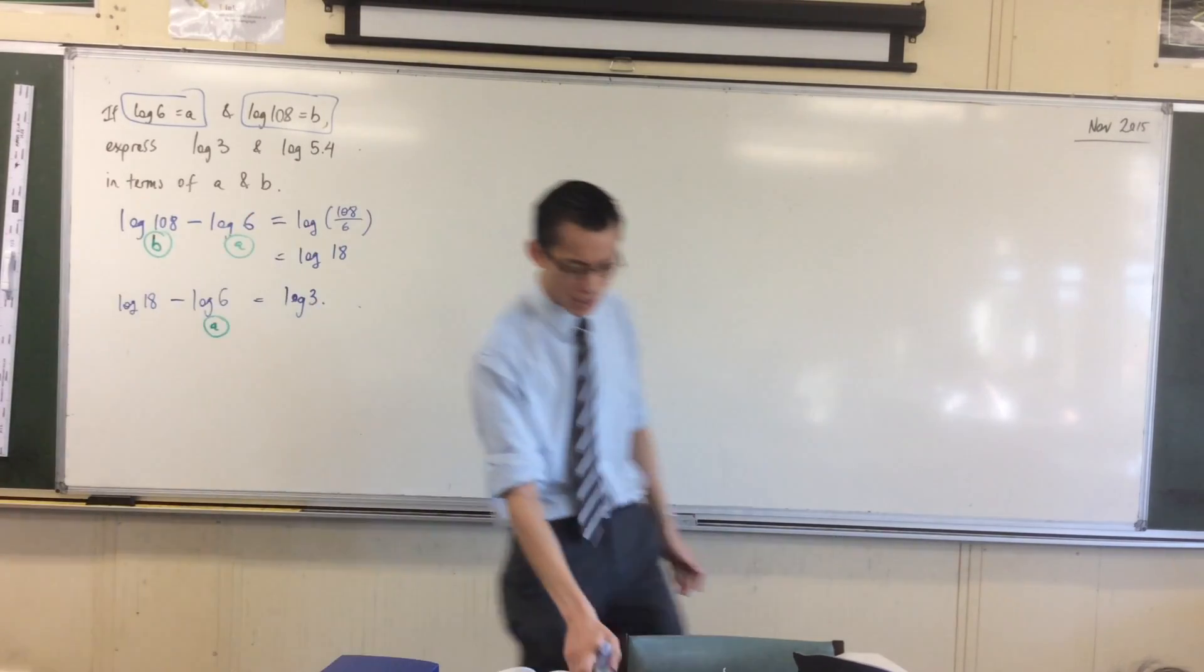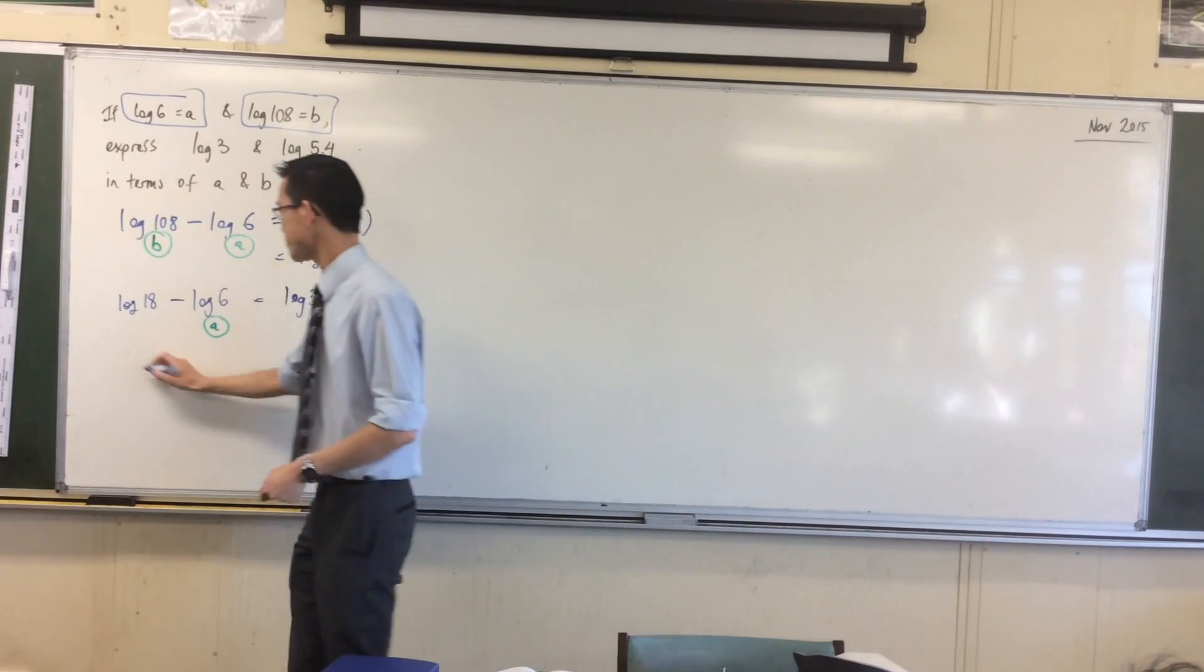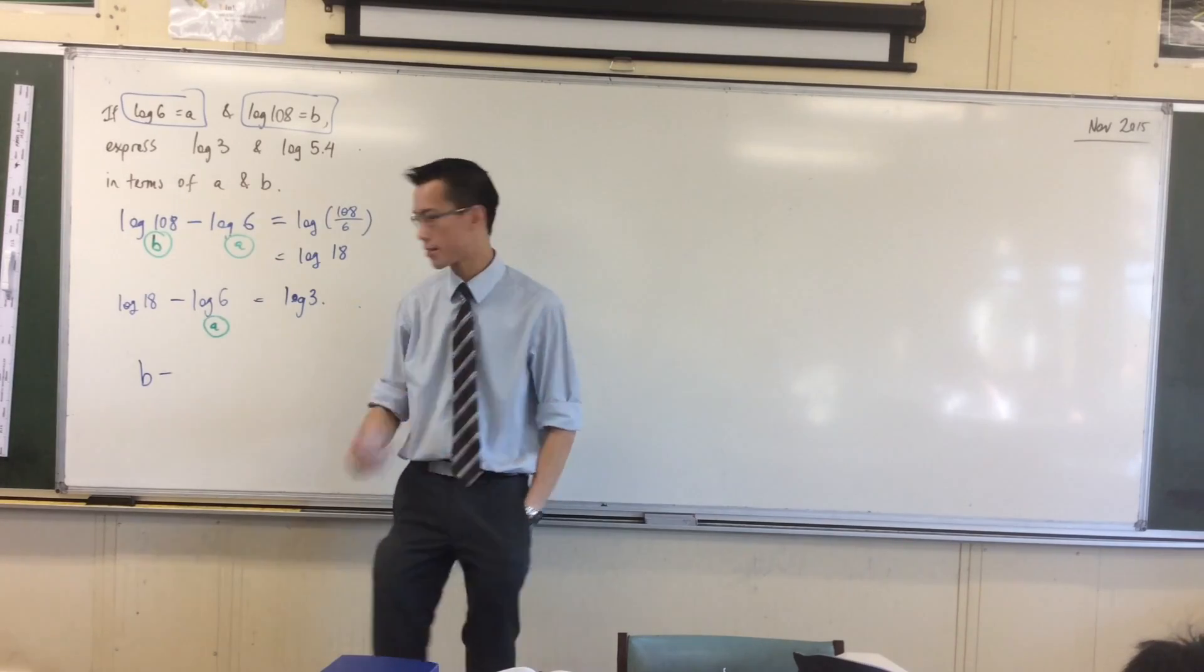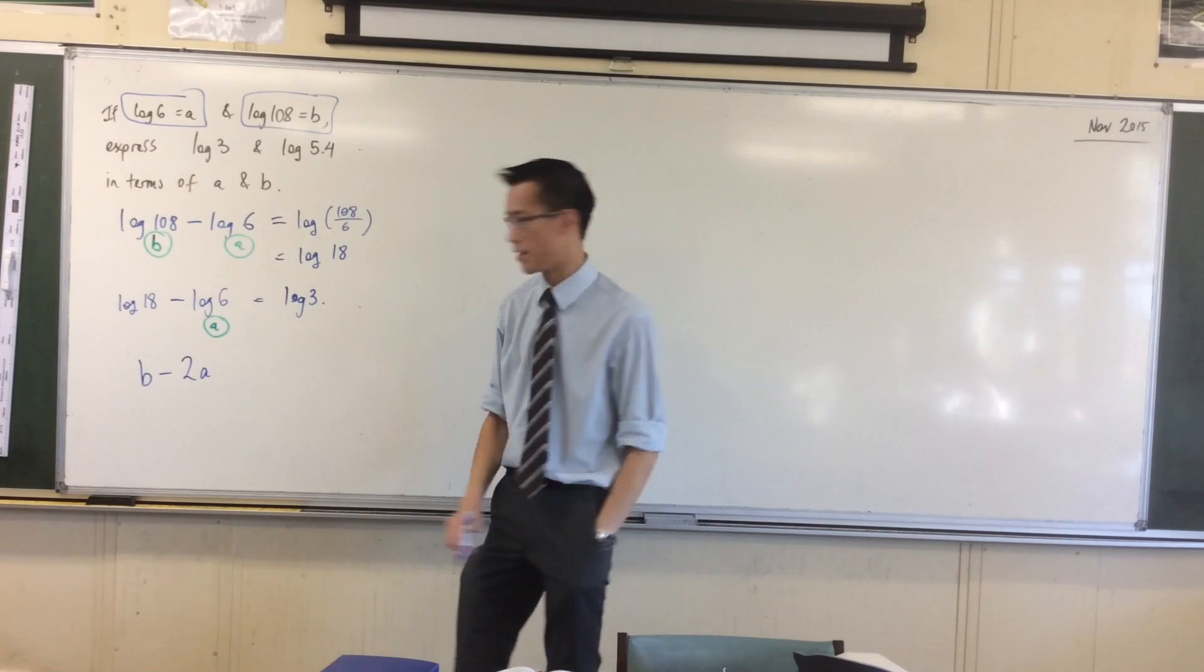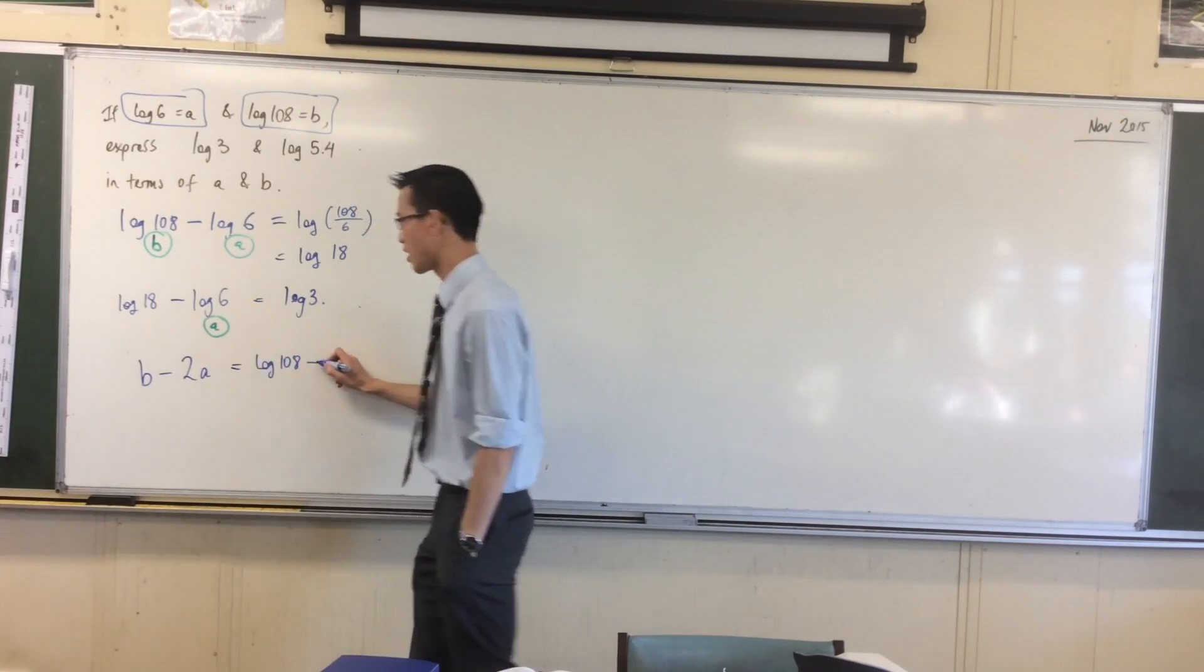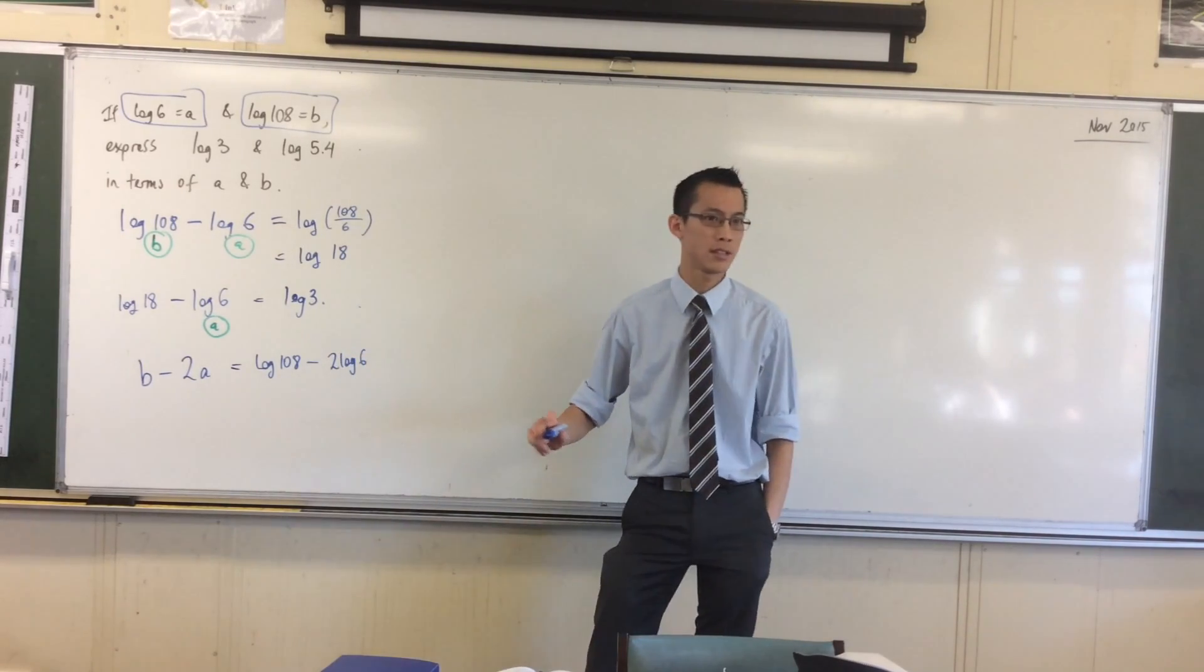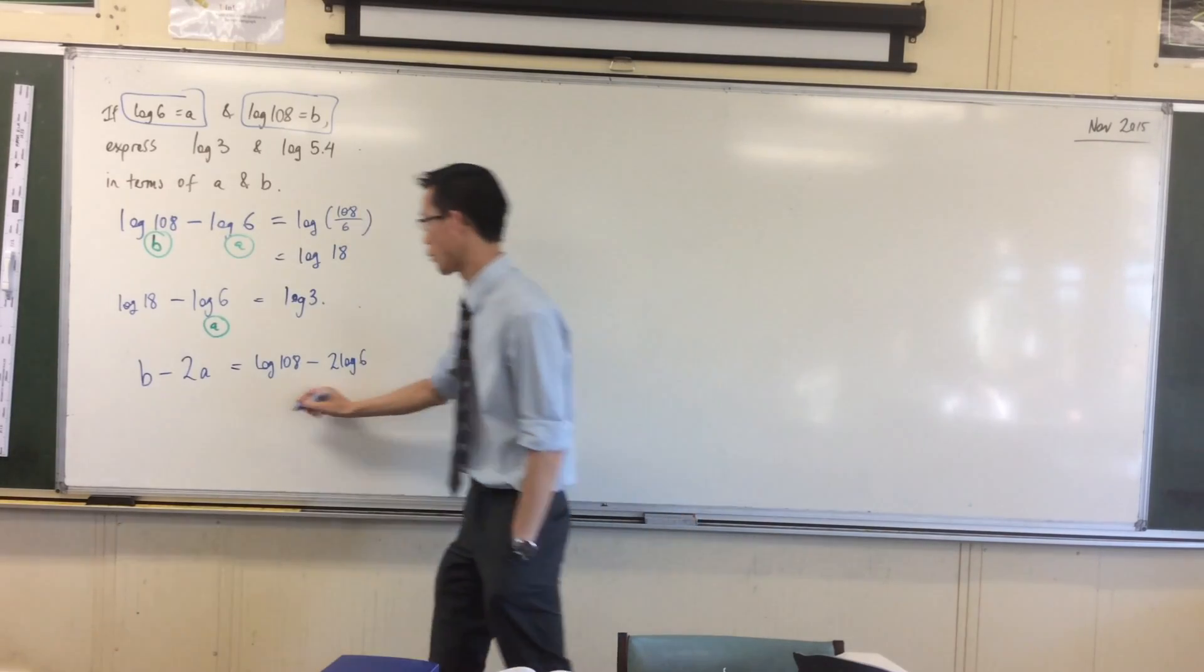Therefore, what I can do is—in summary, what I've done is I started with B and then I subtracted A twice. That's 2A. Let's just verify that this actually works. That's log 108 take away 2 log 6. Let me see if I'm going to get the same result as what I just did.